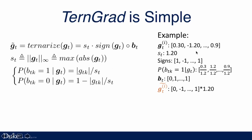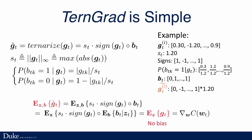Here is a simple example. GT is the floating gradient, and ST is the maximum norm, which is 1.2. We get the signs of all gradients: 1, -1, and 1. For each gradient, for example the first gradient, the probability of being 1 is 0.3 over the maximum norm. We draw from the value distribution to get a sequence of either 0 and 1, and finally multiply all of them to get a quantized gradient. We just need to communicate the ternary gradients with one extra floating scalar, so we can significantly reduce communication. The expectation of the ternary gradients is just the original expectation of the floating gradient, so it's an unbiased approximation.